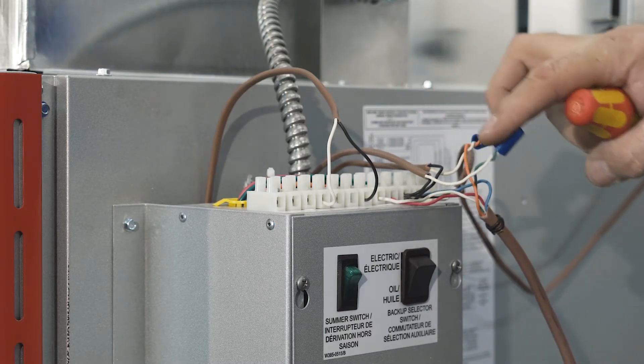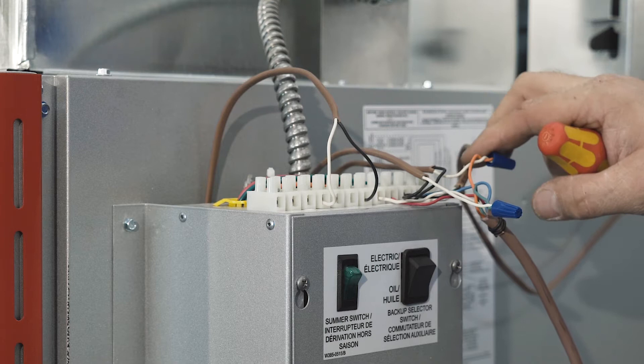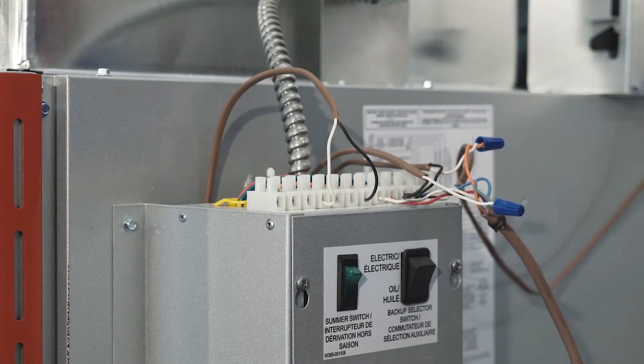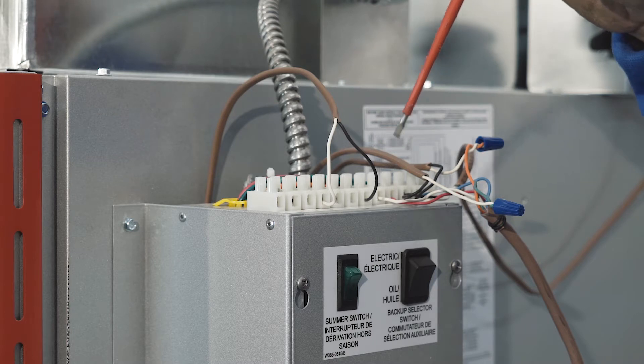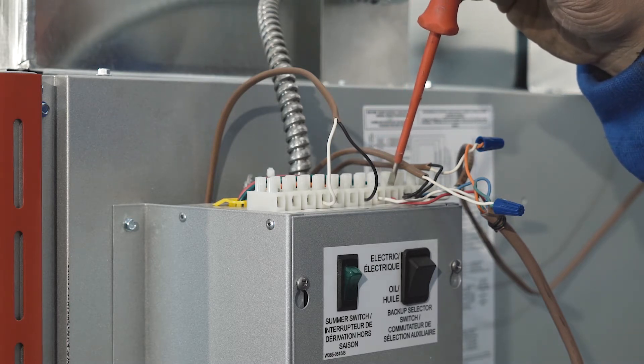With the thermostat connections you'll follow the directions in the manual as to where to put the R and the W. It's depending on what kind of backup heat you're utilizing. In this case it's 8 and 9.